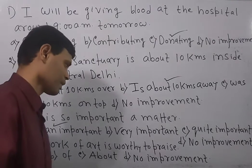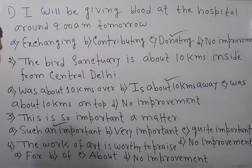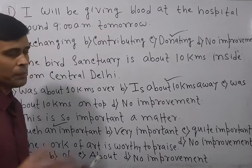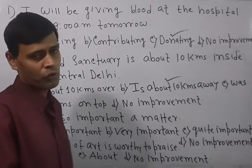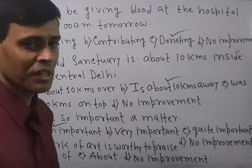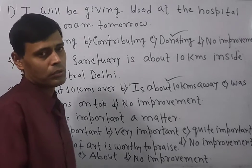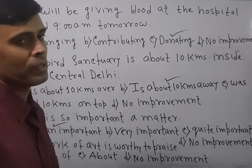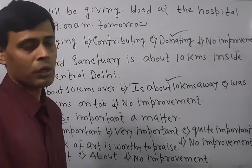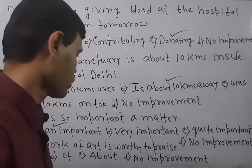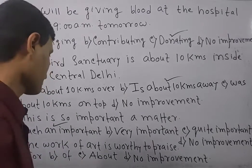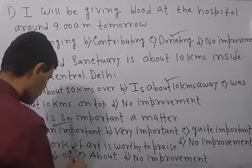Next question: 'The work of art is worthy of praise.' The four options are: for, of, above, no improvement. The basic preposition that follows 'worthy' is 'of,' not 'for' or 'above.' So 'for' and 'above' are automatically eliminated, and 'of' is the right answer, meaning no improvement is needed — option B.